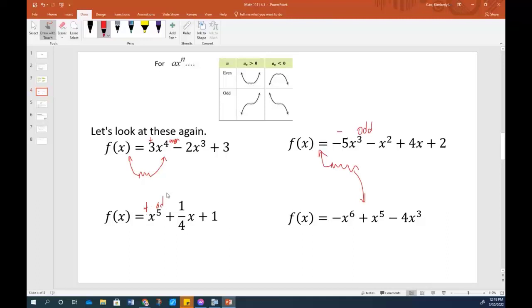A positive odd. Positive, the right-hand is headed up. Odd means the left-hand is going the opposite way. Negative even. Negative means the right-hand is headed down. The even means that the left-hand is going the same direction. So we learn about end behavior. What is happening on the ends from just looking at that first term.